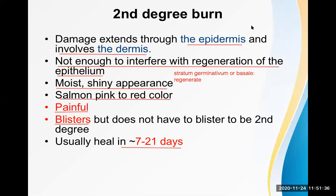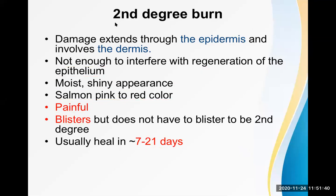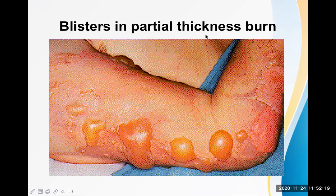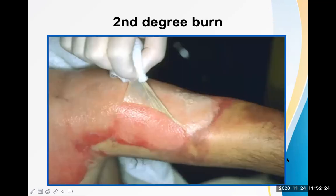Images of second degree burns show bubbles of fluid under the skin — these are blisters containing protein-rich exudate. In some cases the blister ruptures and a sheet of skin peels off, which is still classified as second degree burn.